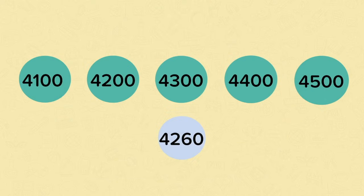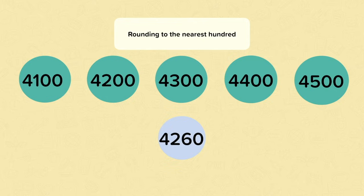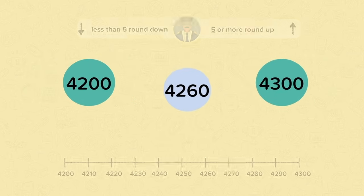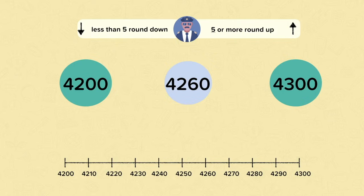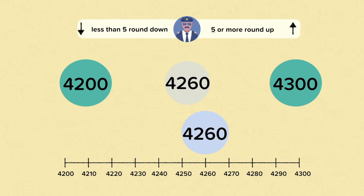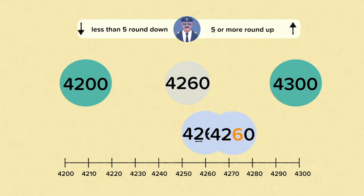Now let's look at rounding to the nearest hundred. The first thing that we need to do is work out which hundreds are either side of 4260. The hundred before would be 4200 and the hundred after would be 4300. If we put this number on a number line, we can see that it's closest to 4300. But if we didn't have the number line, we go to the hundreds digit, which is two, then focus on the digit one space to the right and apply the rounding rule. This digit is six — that's more than five — so we round up to 4300.